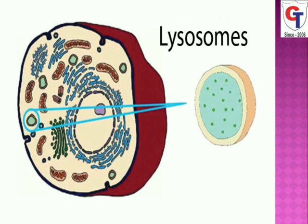Lysosomes contain acid hydrolytic enzymes including phosphatases, sulfatases, proteases, nucleases, lipases, and glycosidases.